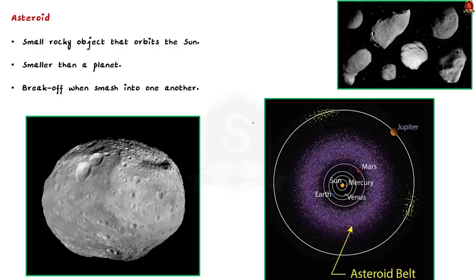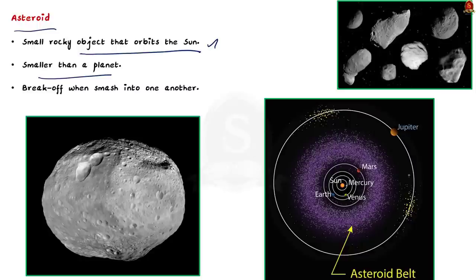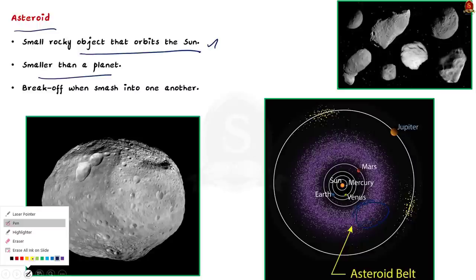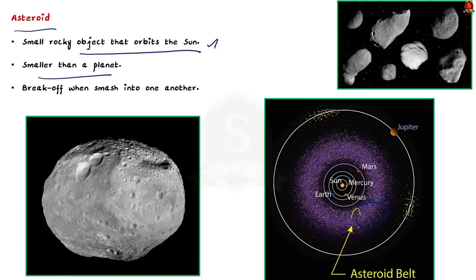Let me tell you about asteroids first. An asteroid is a small rocky object that orbits the sun. They are smaller than a planet. Most asteroids in our solar system are found in the main asteroid belt, a region between Mars and Jupiter which is full of asteroids. Since many asteroids are together, they may smash into one another, leading to asteroids breaking off into smaller pieces. These pieces are called meteoroids.